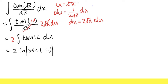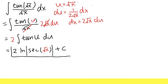We put down u, but we know u equals square root of x, so we just write that down. We are done after we put down the plus C — just like this. That's it!